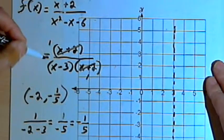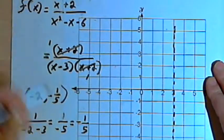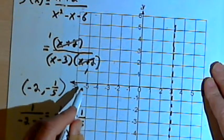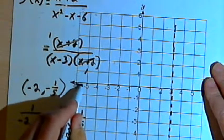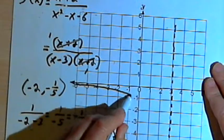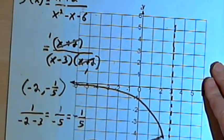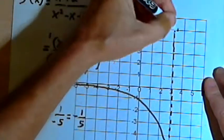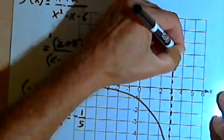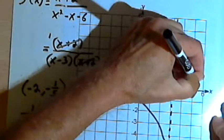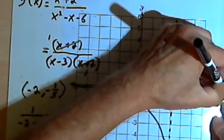My horizontal asymptote is going to be at y equals 0. So I can start sketching the graph in. I'll start just below that horizontal asymptote and curve downwards towards the vertical asymptote. And then I'll start up again at the top of the vertical asymptote and curve downwards and to the right toward the horizontal asymptote.